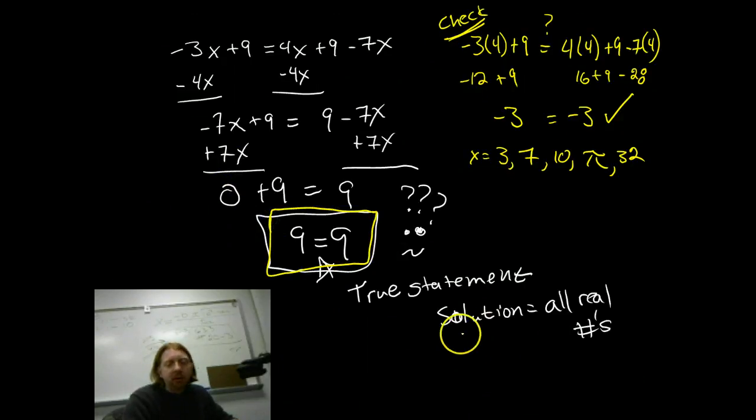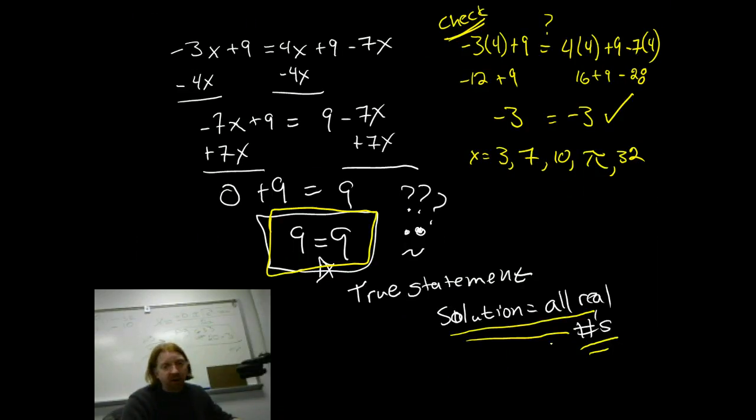So, again, that would mean that my solution is all the real numbers. Now, in contrast, if I had worked out and got a false statement, for example, I got 6 equals negative 10, that would mean that I was looking at a situation where no value of x will make it true. And my solution in that case would be no numbers work or the empty set.